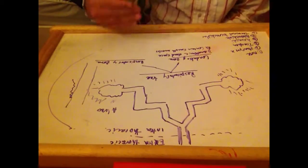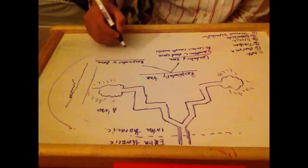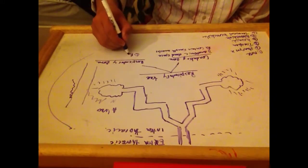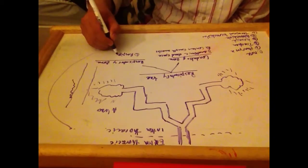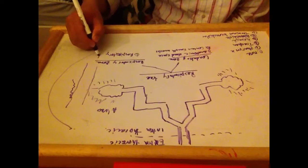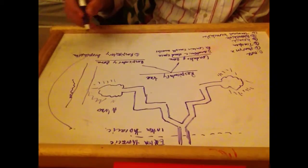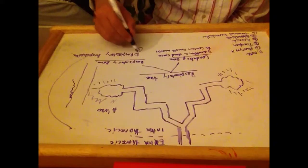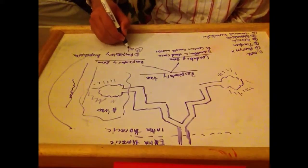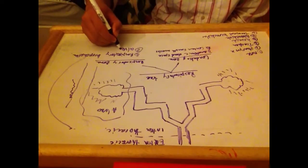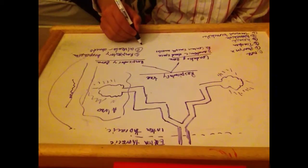Below the terminal bronchioles, you have the respiratory bronchioles, the alveolar ducts, and the alveoli.